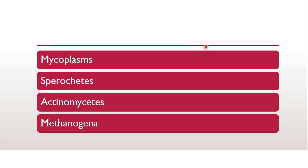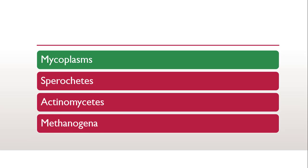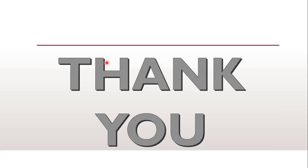The next question is: all prokaryotes are surrounded by a cell wall except — whether they are mycoplasmas, spirochetes, actinomycetes, or methanogens. The correct answer is mycoplasmas. We just discussed that mycoplasmas don't have a cell wall, so they are resistant to beta-lactam antibiotics such as penicillin. Since their major function would be acting on cell wall, and mycoplasmas lack a cell wall, they are resistant towards penicillin. With this we finish the MCQs part 1 from bacteria.